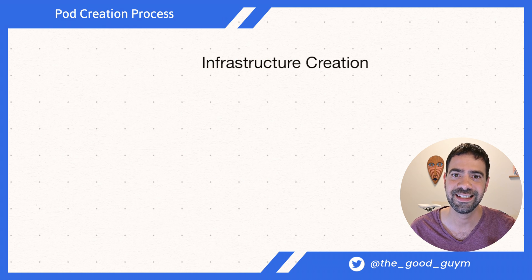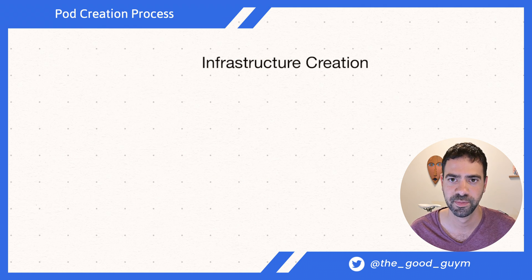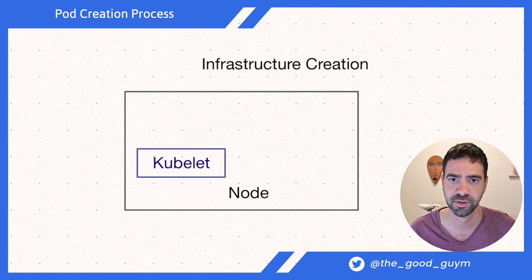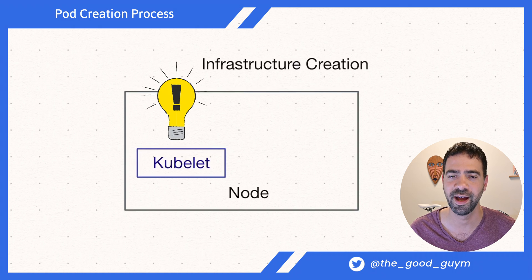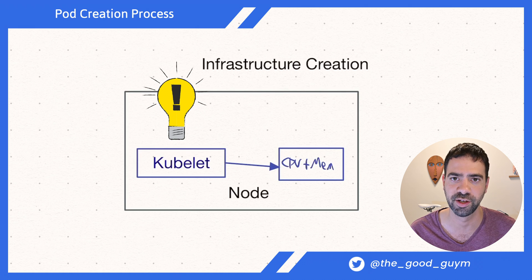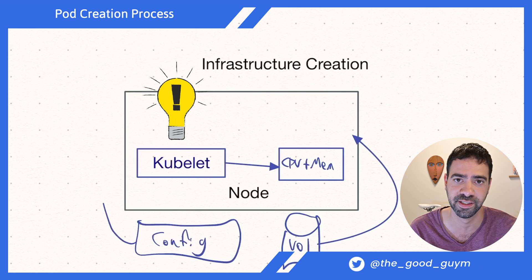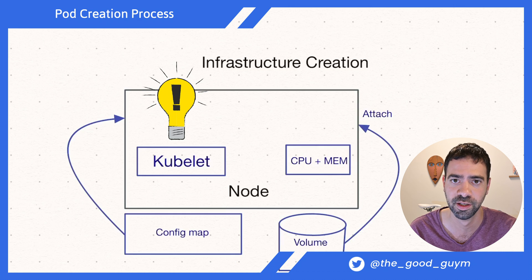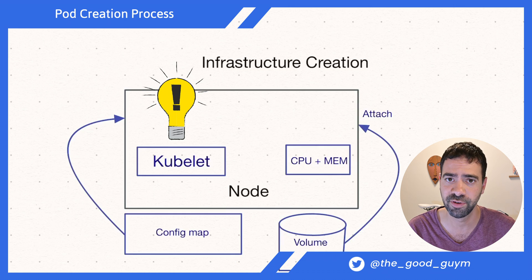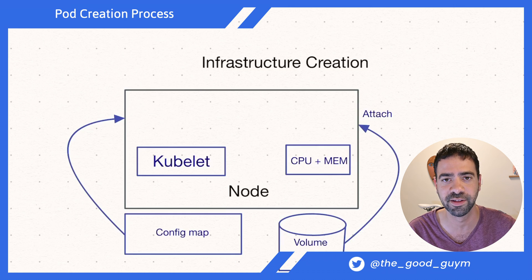The next step is the infrastructure creation step. After Kubernetes finds the right node to run the pod, it schedules the pod on that node. Then the kubelet on the node figures out it needs to run this pod, and the kubelet creates the full infrastructure for that pod — for example, reserving resources to make sure there is enough CPU or memory to run the pod, or attaching volumes to make sure all the relevant file systems are in place before running the pod.